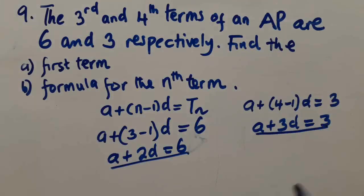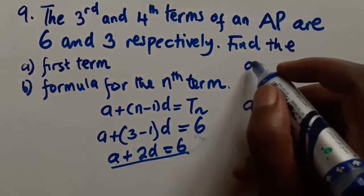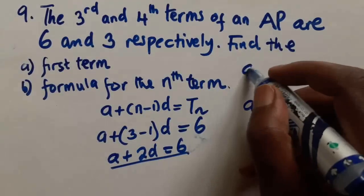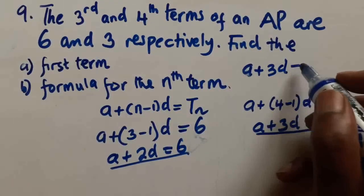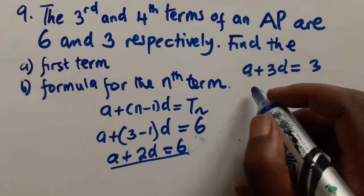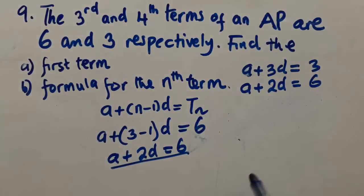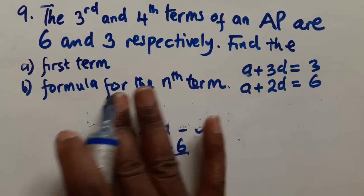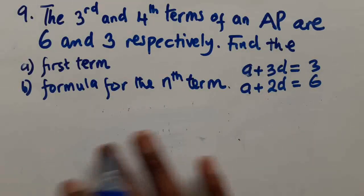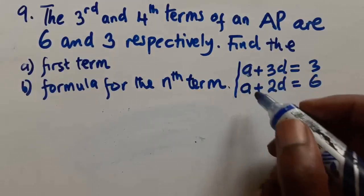We now solve these two equations simultaneously. We write: a + 3d = 3 and a + 2d = 6. Since 'a' has the same coefficient in both equations, we can eliminate 'a'.